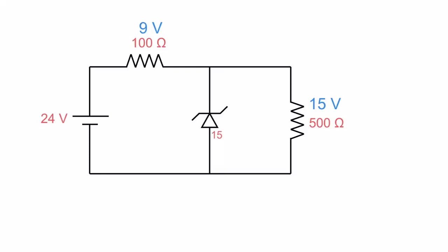and that will give me a current of 30 milliamps. And up here on my current limiting resistor, I can just take 9 volts divided by 100 ohms using Ohm's Law, 90 milliamps.